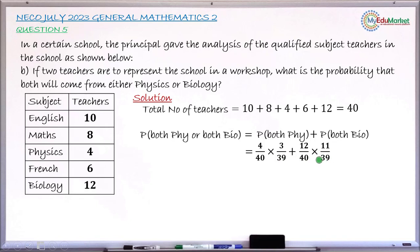So, it's this that we are going to simplify. So, multiplying 4 by 3 and 40 by 39 correctly, you now have 1 over 130. That is after simplifying. So, multiplying 12 over 40 times 11 over 39 and simplifying the result, you now have 11 over 130.